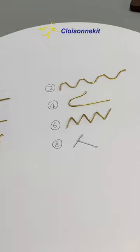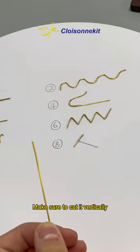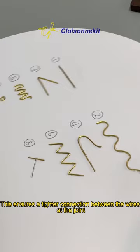Next is the last pattern, with a joint. Make sure to cut it vertically. This ensures a tighter connection between the wires at the joint.